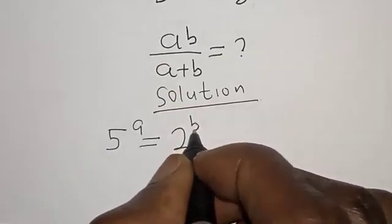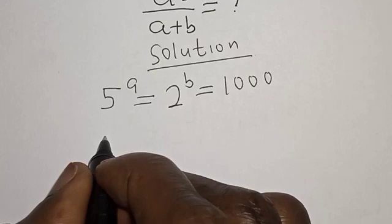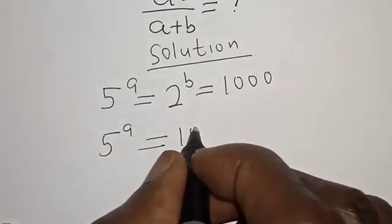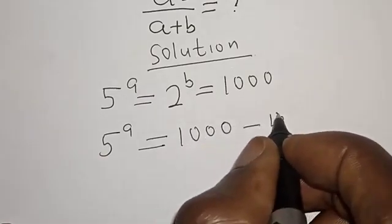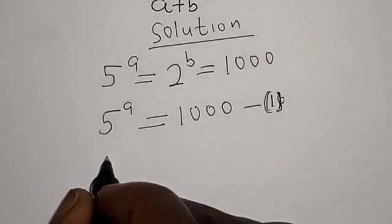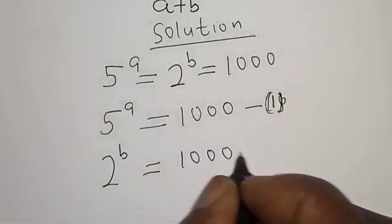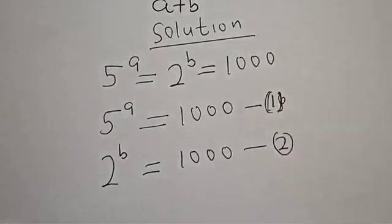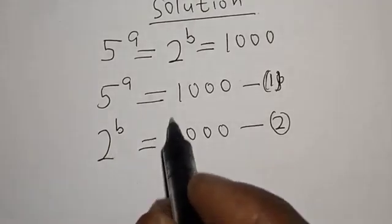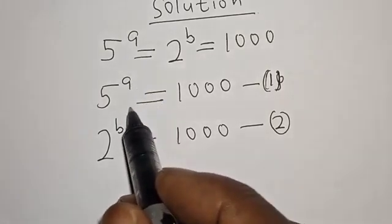Then 5 raised to power a is equal to 1000 — let's call this equation 1. Then we have 2 raised to power b is equal to 1000 — let's call this equation 2. Now let's multiply the exponent of equation 1 by 1 divided by a.